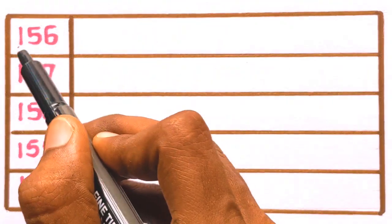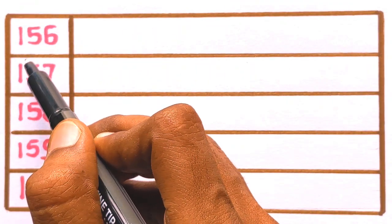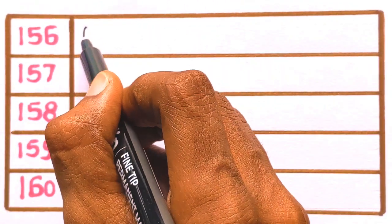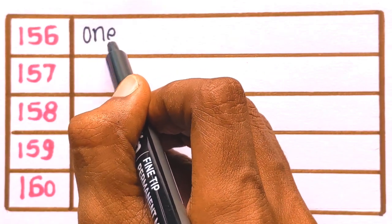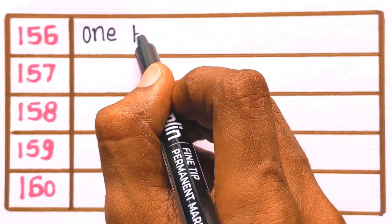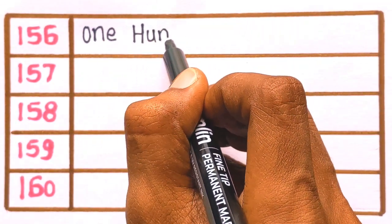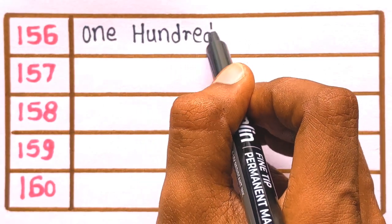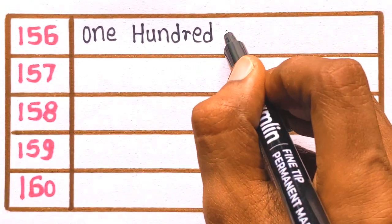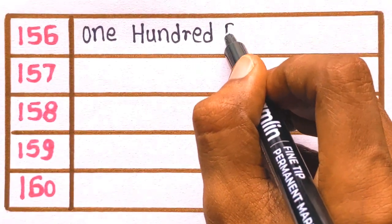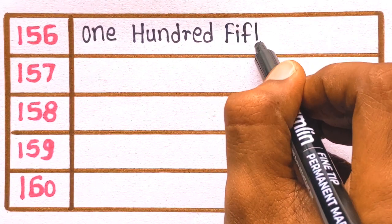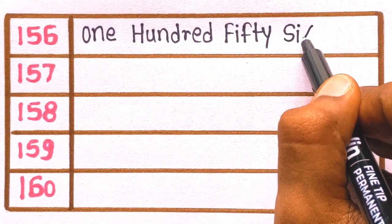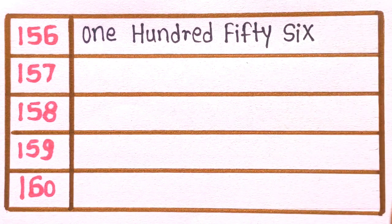Next is 156. O-N-E, one. H-U-N-D-R-E-D, one hundred. F-I-F-T-Y, fifty. S-I-X, six. 156 is one hundred fifty six.